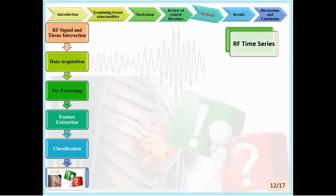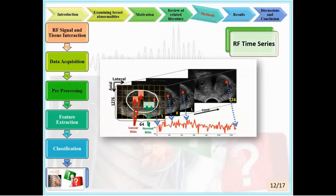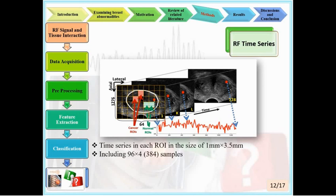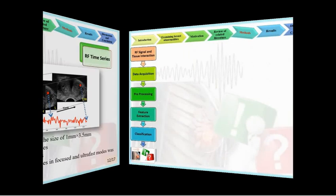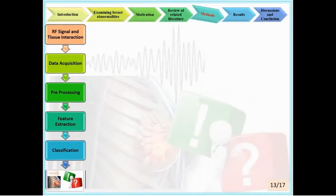In pre-processing, the recorded frames were used to make RF time series. After recording, features were extracted from time series in each ROI of size 1 × 30.5 mm, including 384 samples at a depth of 2 cm from the frames, which corresponds to the depth of the probe's focus.